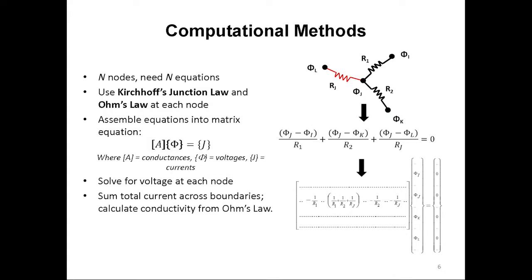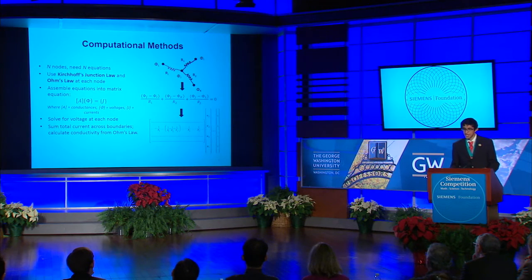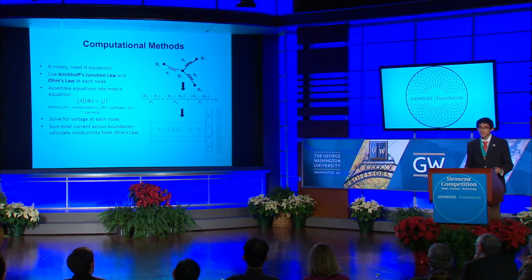Specifically, by aiming to calculate a voltage at every node in the system, I define n unknown variables, one for every node. In order to solve for n unknowns, we need n electrical equations, one written at each node. We can write an electrical equation at each node by applying Kirchhoff's junction law and Ohm's law. Kirchhoff's junction law states that the total current entering a node must equal zero, while Ohm's law allows me to rewrite these equations in terms of the unknown voltages and the known resistances. Every node consists of two rod resistors and one junction resistor. All these equations can then be combined into a large matrix equation, which can be solved to yield the voltages at every node in the sample. By going to the boundaries, I can easily sum the total current flowing through the sample and then calculate the sheet conductivity by again applying Ohm's law.